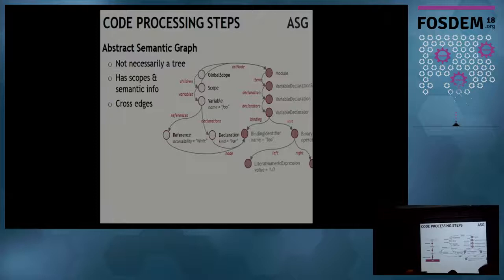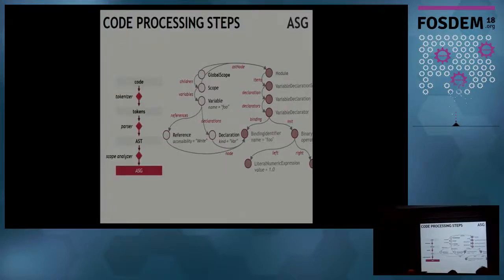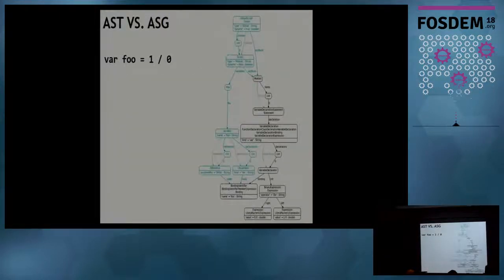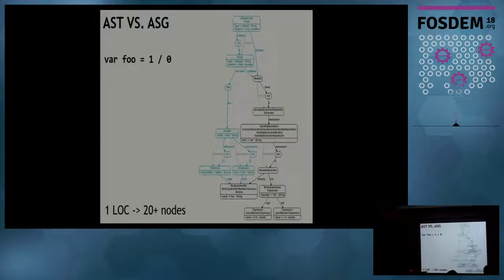This is compiler construction in a nutshell. Even though we started with a very simple example — six tokens, a single line of code — we get more than 20 nodes. For a very sophisticated line of code, we can get 50 to 100 nodes easily. So these graphs are pretty large.